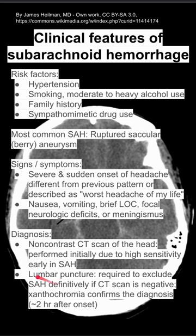And if you have a subarachnoid hemorrhage, on lumbar puncture you'll see xanthochromia to confirm the diagnosis. That happens about two hours after onset.